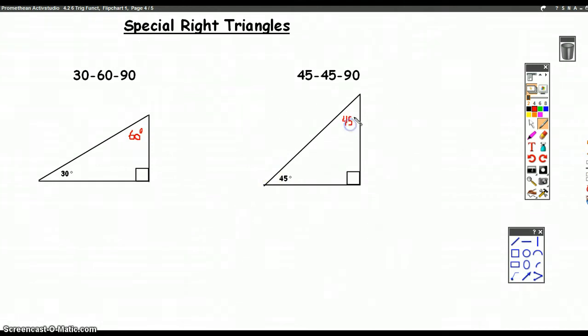And the reason these are special is because the ratio of their sides is completely determined once you know that you're looking at a right triangle with an acute angle that's 30, one that's 60, and the other one 90, of course. And what was that relationship?